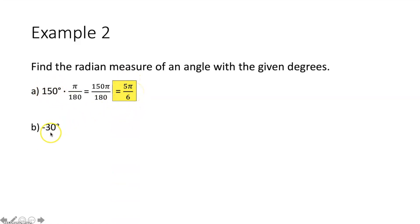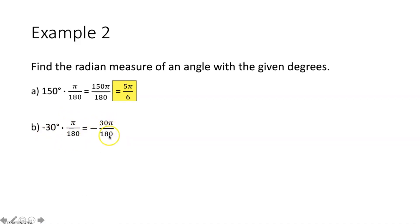Part b, we want to convert negative 30 degrees to radians. We multiply by π over 180. Imagining negative 30 as over 1, we multiply numerators and denominators together to get negative 30π over 180. Simplifying, 30 over 180 reduces to 1 over 6, meaning negative 30 degrees is equivalent to negative π over 6 radians.